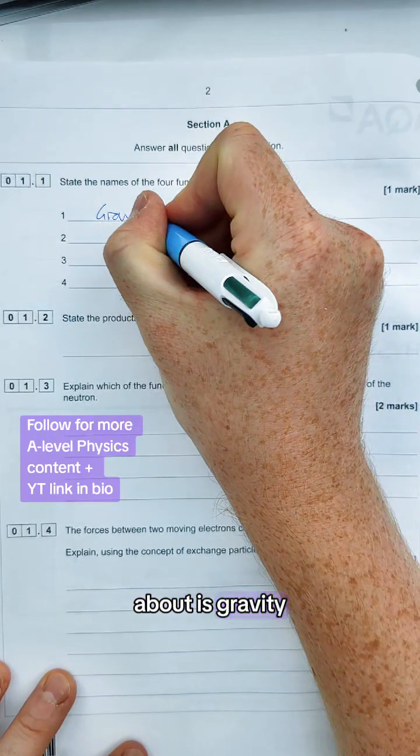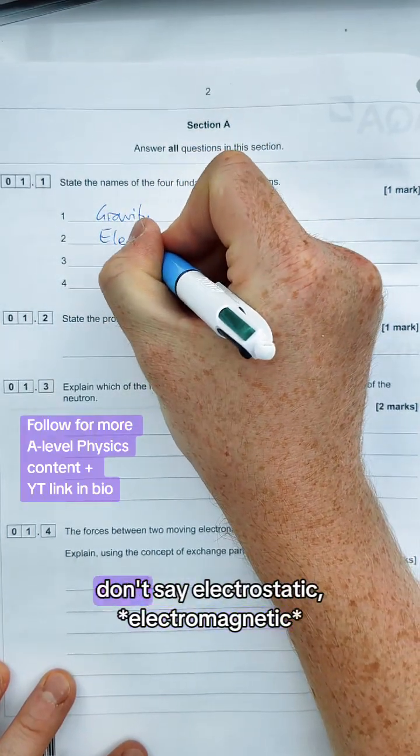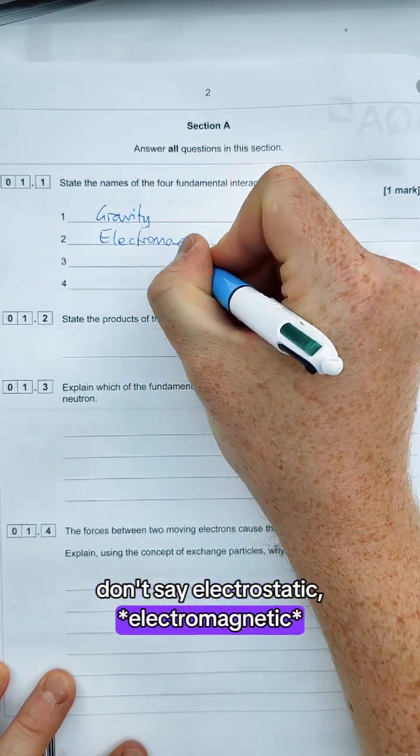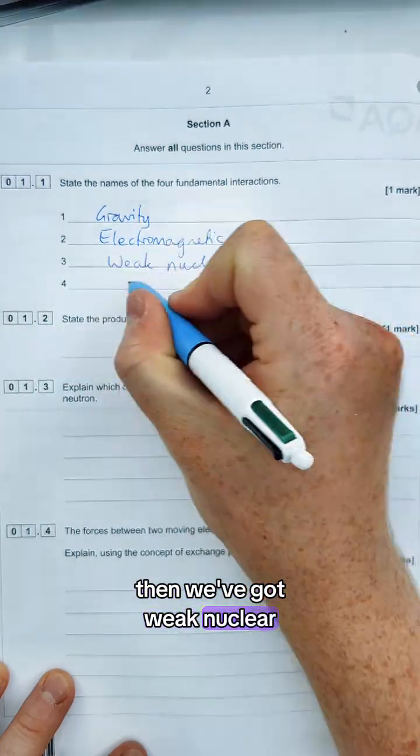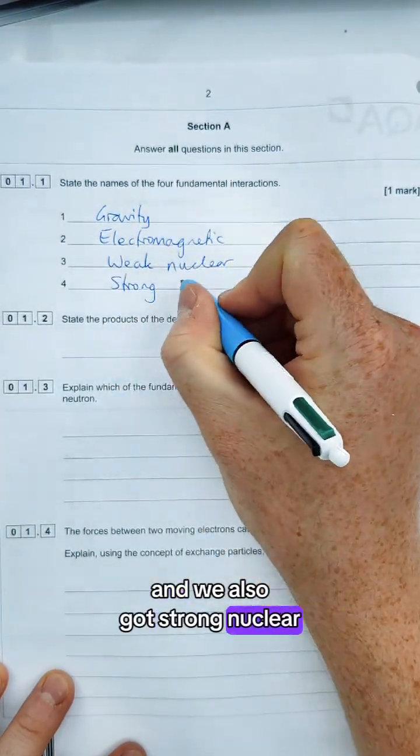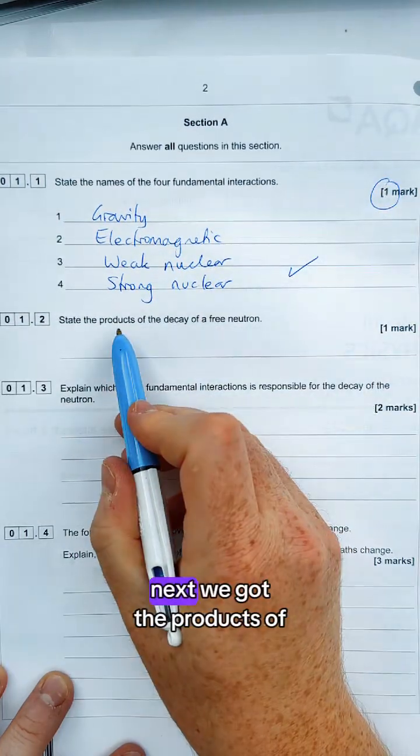We could talk about is gravity, then we've got electromagnetic, don't say electrostatic, electromagnetic. Then we've got weak nuclear and we've also got strong nuclear. Should be a nice easy mark there to state them all in full.